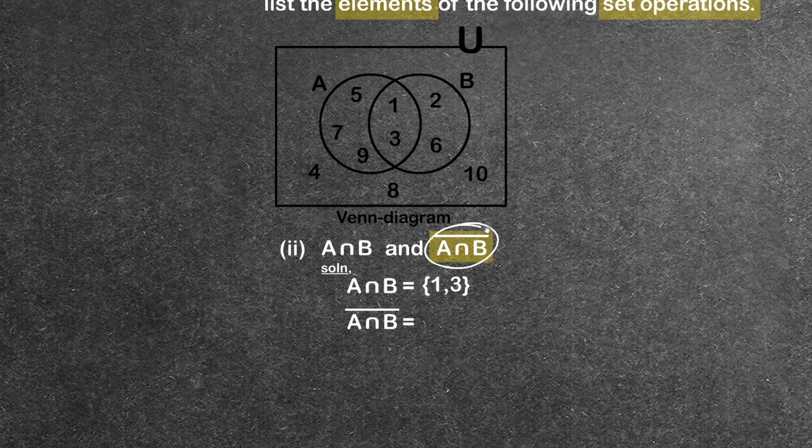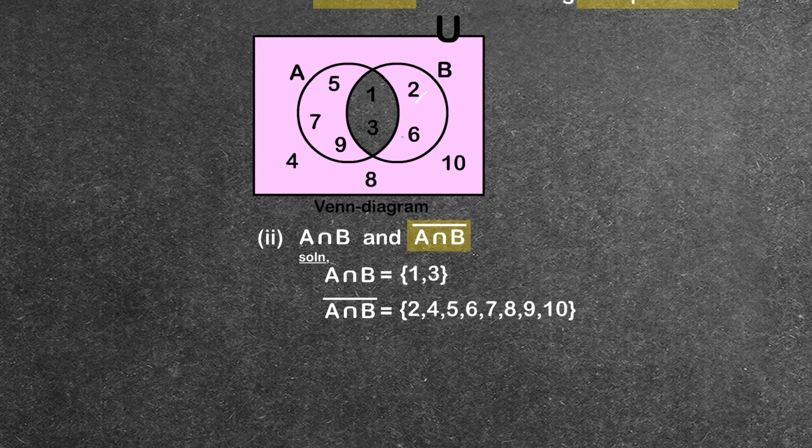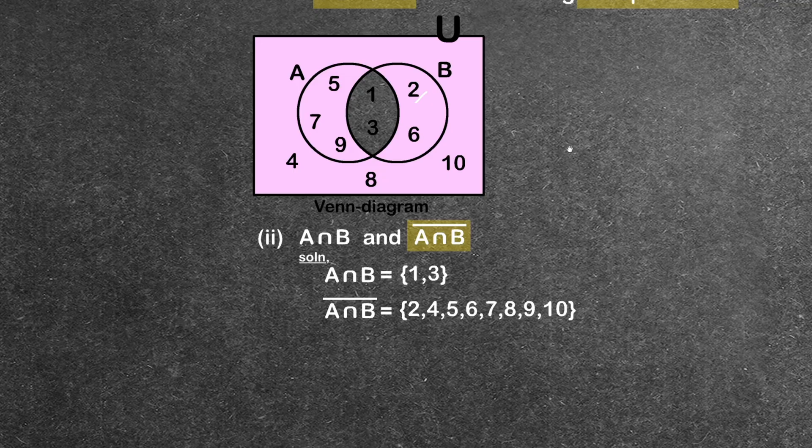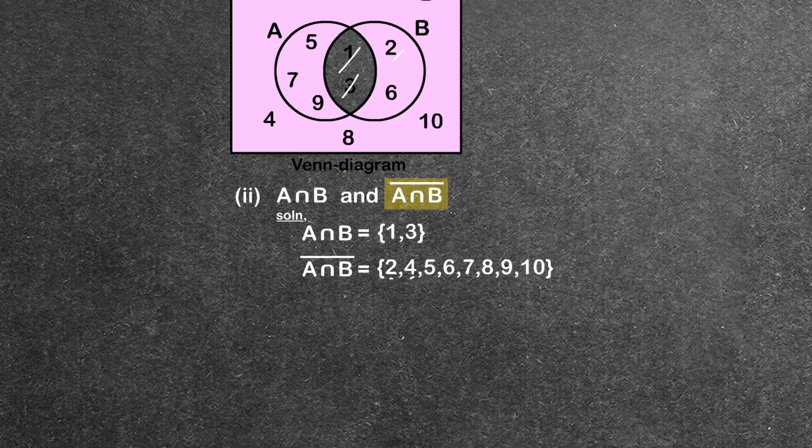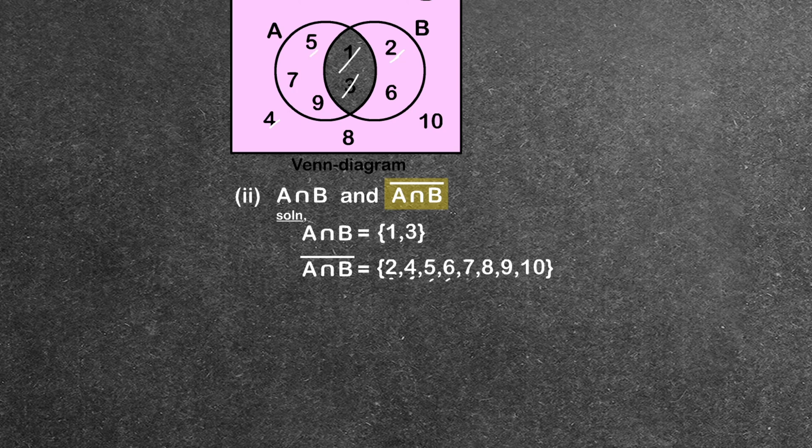Next is (A∩B)', the complement of A intersection B. This means all elements in the universe except 1 and 3. So the complement includes 2, 4, 5, 6, 7, 8, 9, 10.